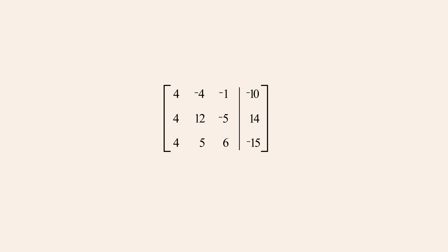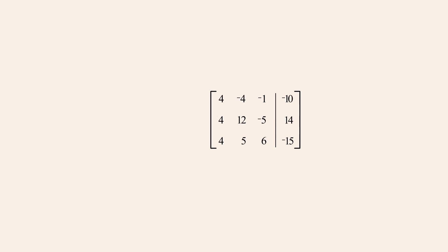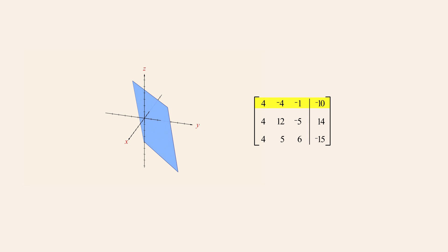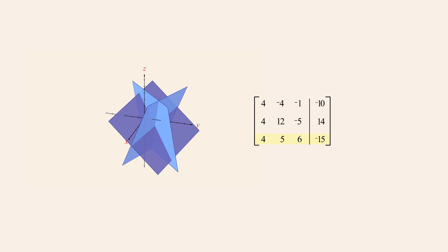Since this matrix represents a linear system in three variables, each matrix row corresponds to a plane in three-dimensional space. We will start by changing the first row's leading entry to a one, using a scale operation to multiply row one by one-fourth. Since a scale operation does not affect a matrix row's graph, this operation has no effect on the planes.